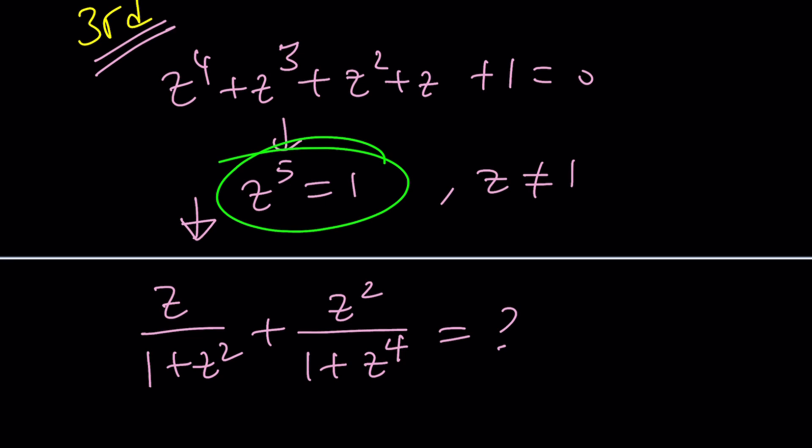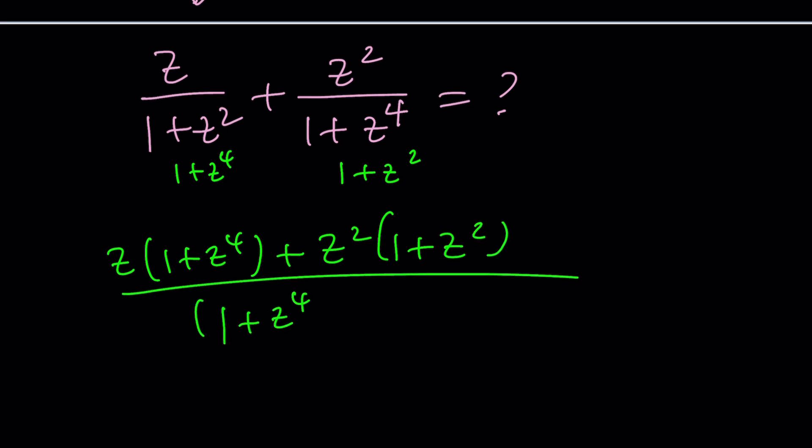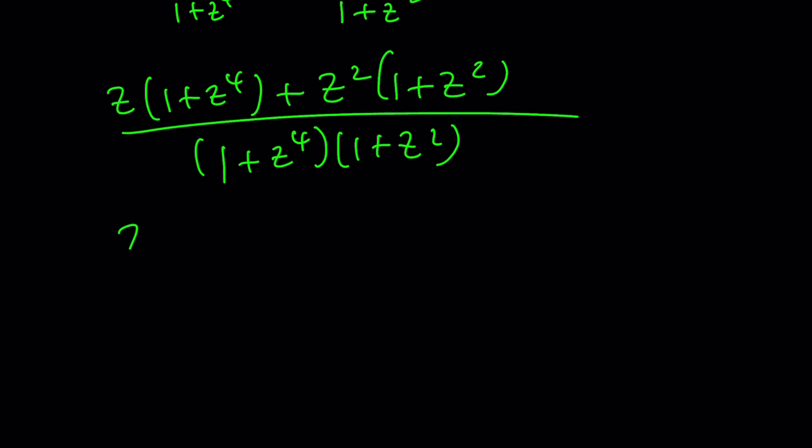First step, I'm going to make a common denominator, multiply by 1 plus z to the fourth and 1 plus z squared. That's going to become z times 1 plus z to the fourth plus z squared times 1 plus z squared, all of that divided by 1 plus z to the fourth times 1 plus z squared. Let's distribute everything and see what happens.